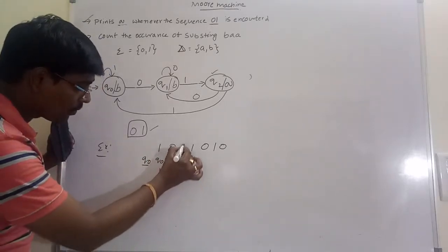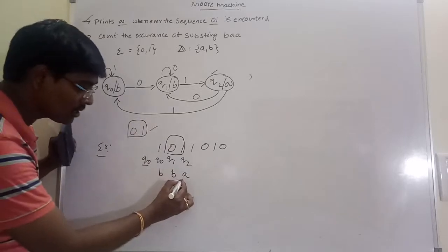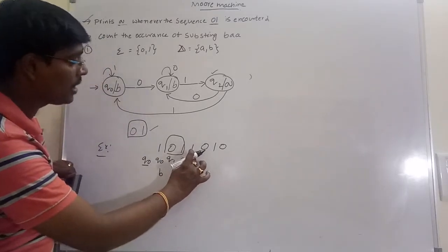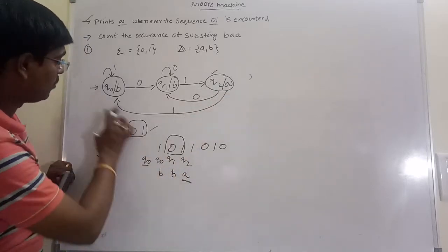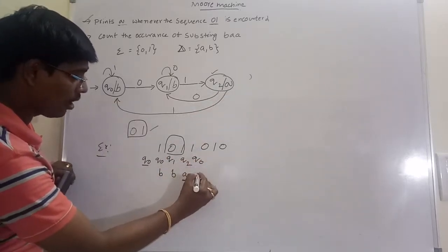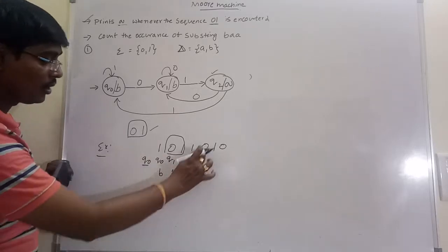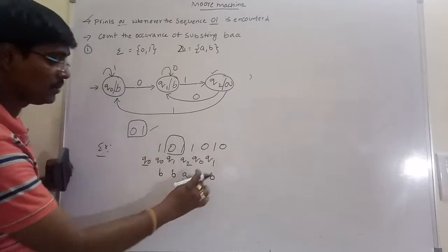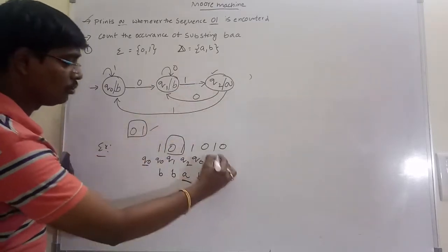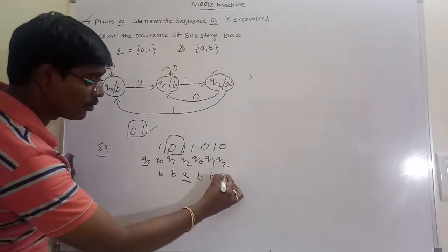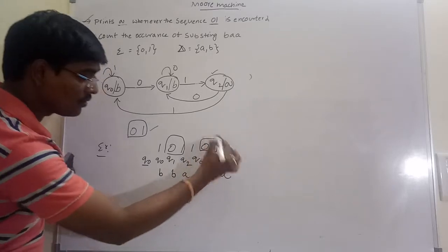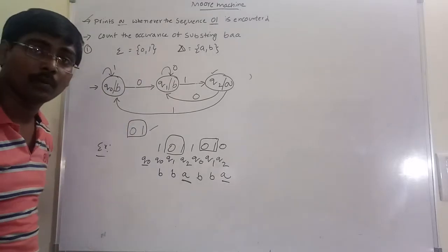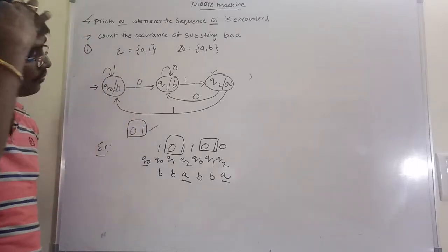Observe: whenever the sequence 0-1 occurs, it produces output 'a'. Suppose q2 on input 1 moves to q0, output is 'b'. q0 on 0 moves to q1, output of q1 is 'b'. q1 on 1 moves to q2, output of q2 is 'a'. The sequence 0-1 occurs and it produces output 'a'. So it satisfies the given problem. This is the Moore machine for the first example.